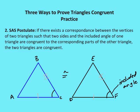We need to know included angles for the second postulate. The SAS postulate stands for Side-Angle-Side. The official wording is: if there exists a correspondence between the vertices of two triangles such that the two sides and the included angle of one triangle are congruent to the corresponding parts of the other triangle, the two triangles are congruent. Basically, if you have a side, an included angle, and another side that are congruent between two triangles, then all parts of the two triangles are going to be congruent.